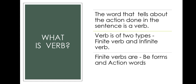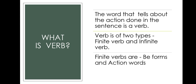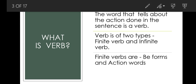Now, what is a verb? Verb means the word that tells about the action done in the sentence — the word that describes what action has occurred. Verbs are of two types: finite verb and infinite verb.